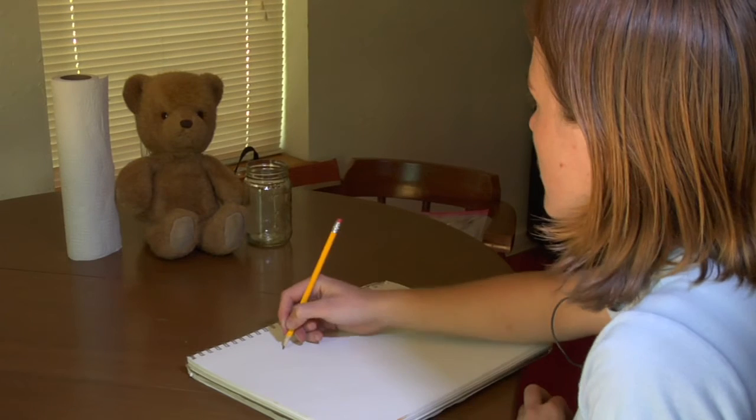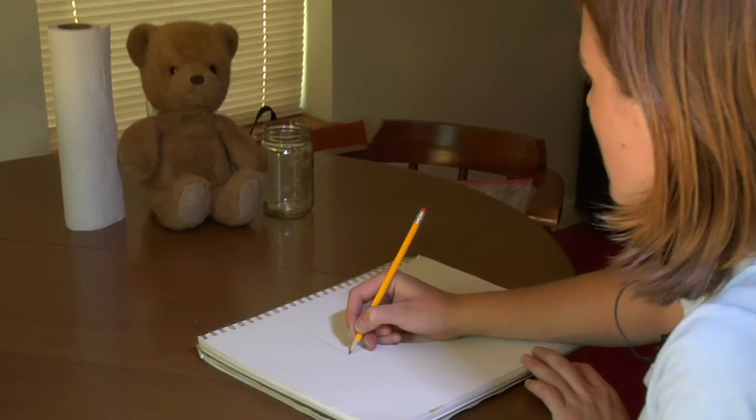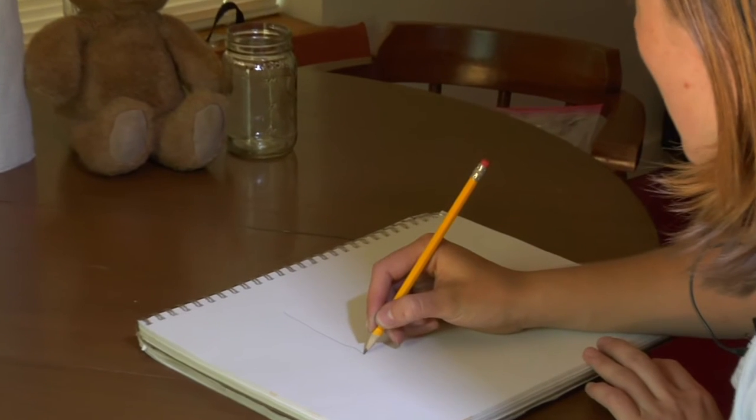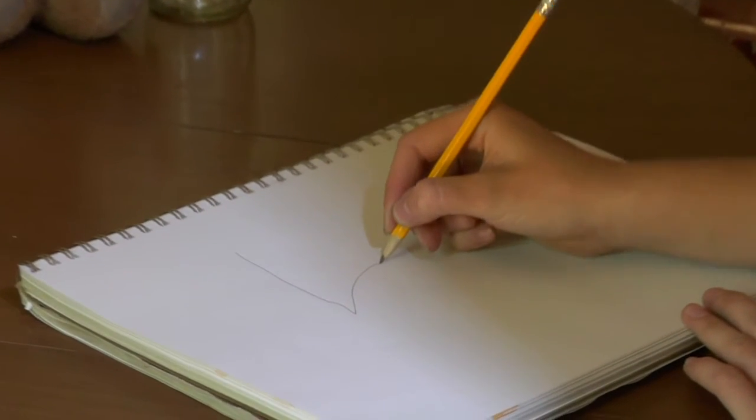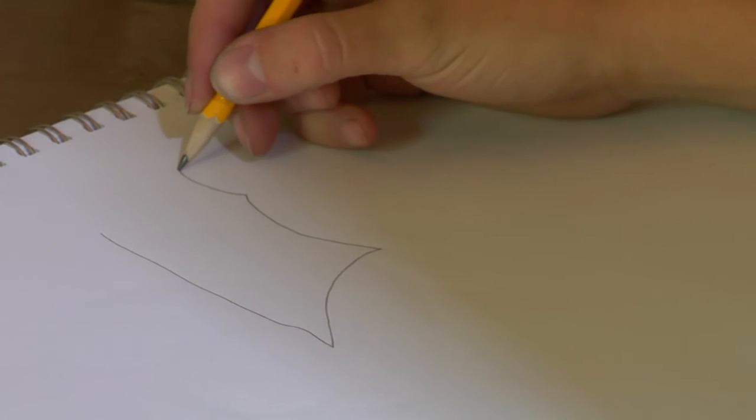But I'm trying to draw the negative space, not the positive of the thing that I'm drawing. The paper towel has a little bit of a dent and then it kind of comes up and up again and around the ear.